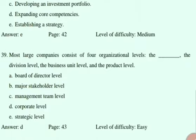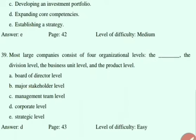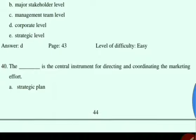Most large companies consist of four organizational levels. The first level is corporate, then divisions, then business unit level, and finally product level. So option D is the correct answer.